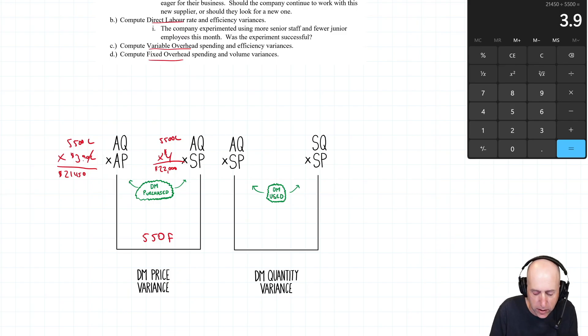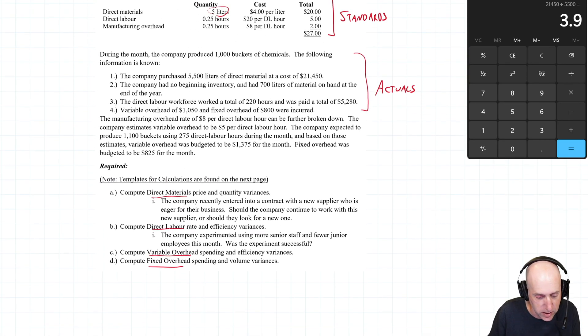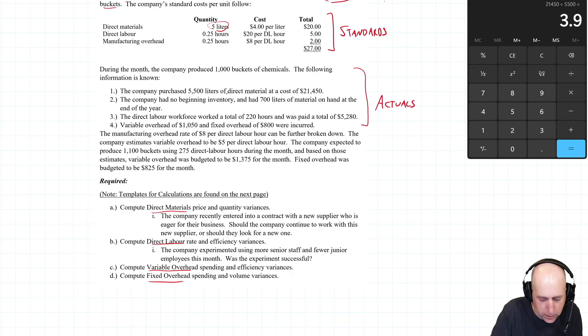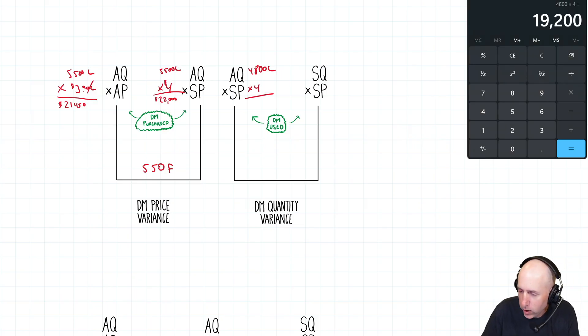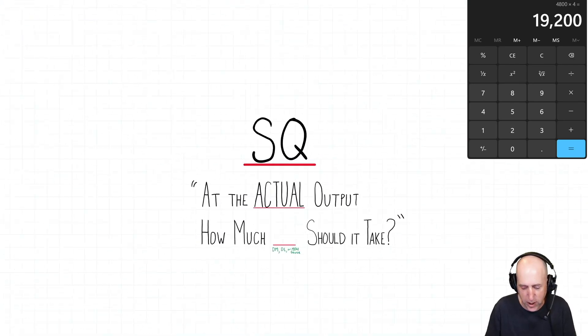Let's move over to the other side of the equation. Now this is on to our material used, not the same AQ as material purchased. The company purchased 5,500 liters at a cost of $21,450. The company had no beginning inventory and had 700 liters material on hand at the end of the year. So of this 5,500, I didn't use 700, I must use the rest, which would be 4,800. 5,500 minus 700 means the actual quantity used was 4,800 liters. Standard price remains 4. 4,800 times 4 is $19,200.